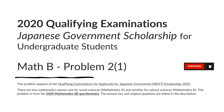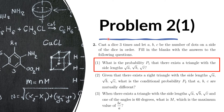The answer key and original questions are linked in the description. Problem 2 has three parts, and this video is for the first part. The problem reads: we cast a die three times. Let A, B, and C be the number of dots on a side of the die in order. We have to find the probability P₁ that there exists a triangle with side lengths √A, √B, and √C.